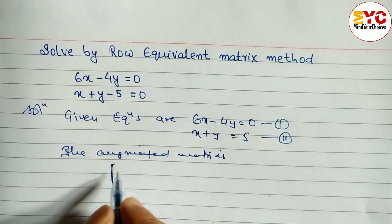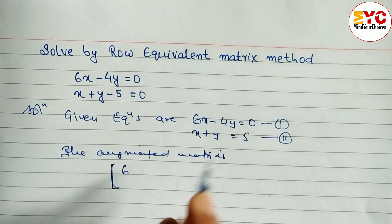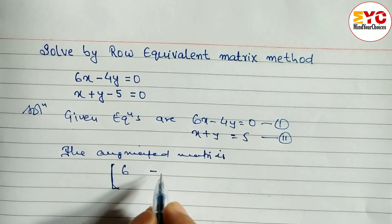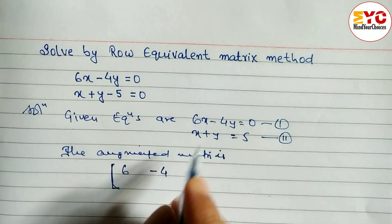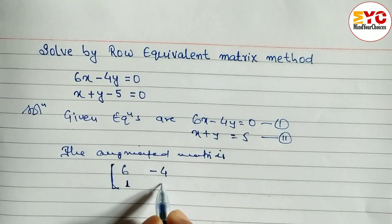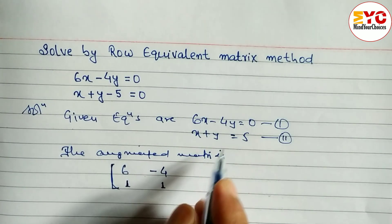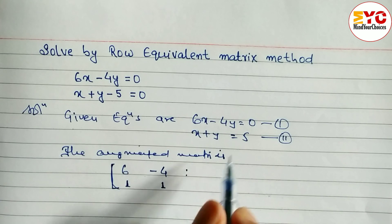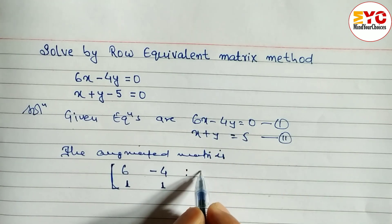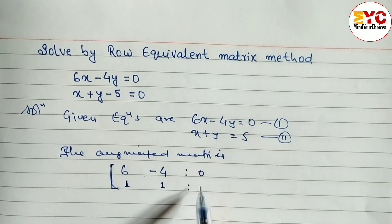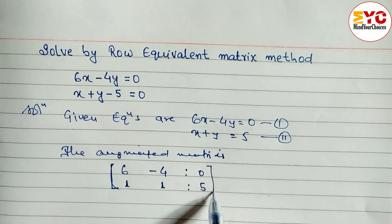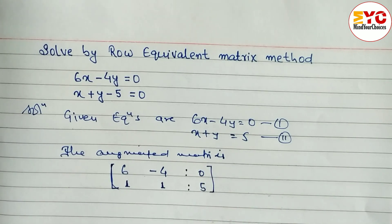Now we write the augmented matrix using just the coefficients of x and y. The coefficient of x is 6, coefficient of y is minus 4. For the second row, coefficient of x is 1, coefficient of y is 1, and the constant is zero for equation one and five for equation two.